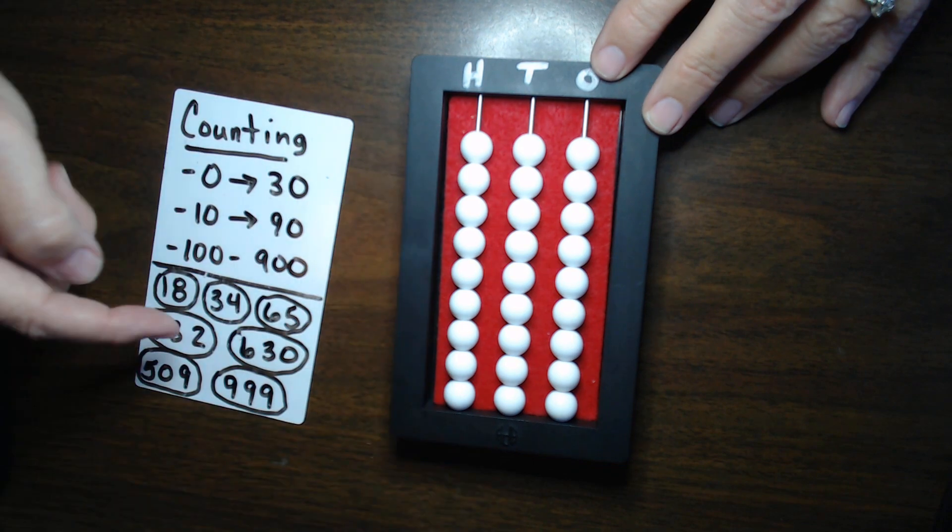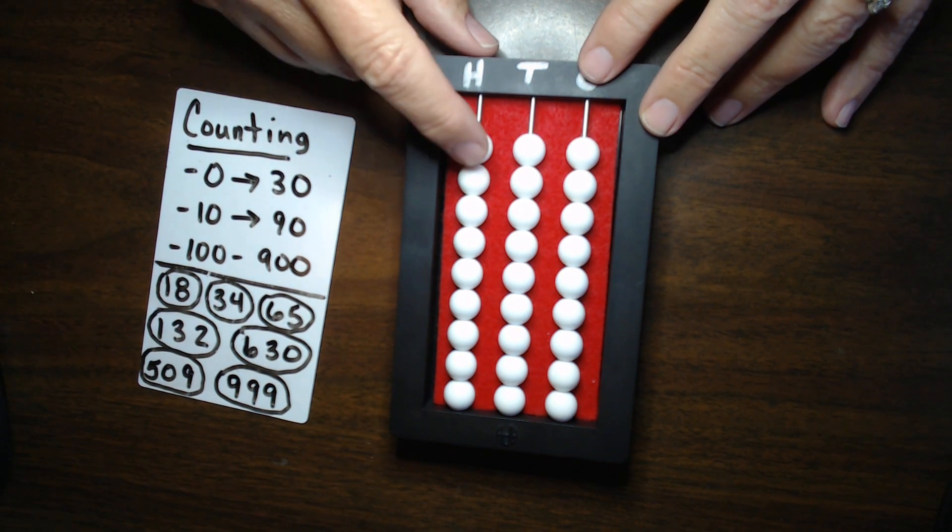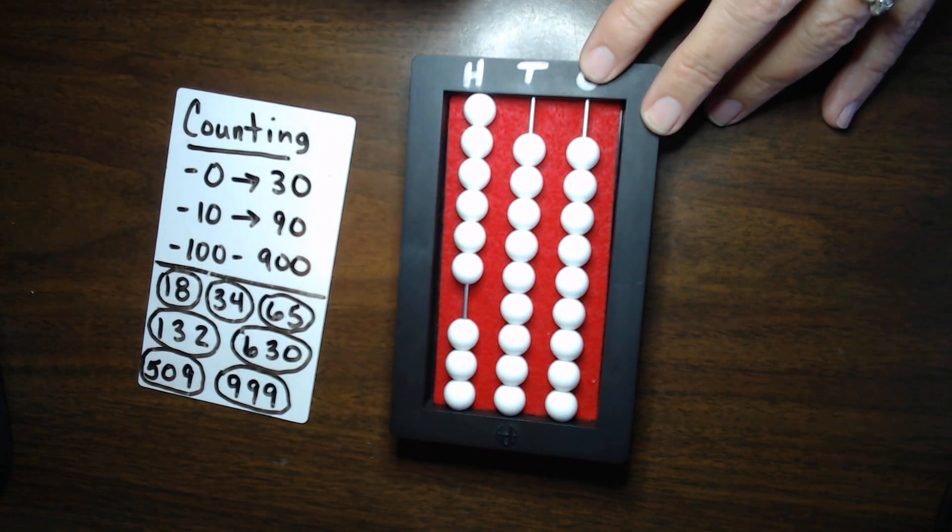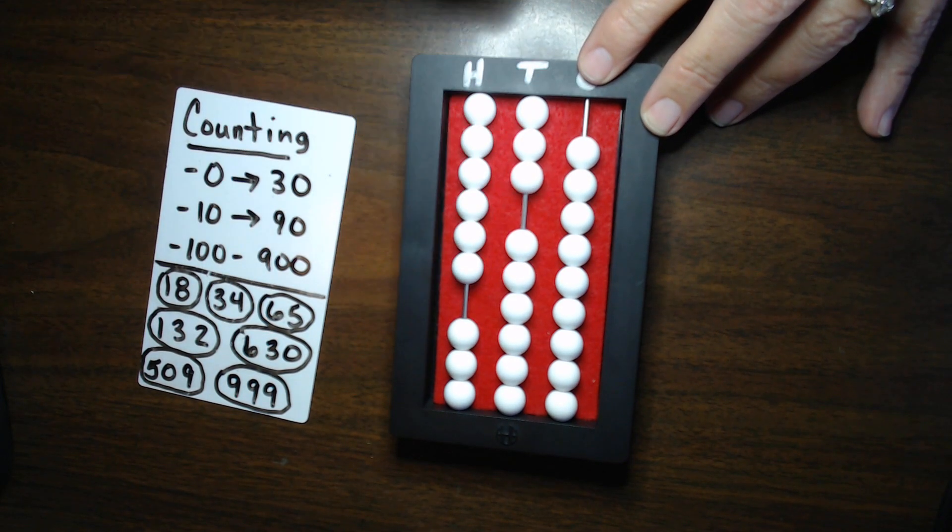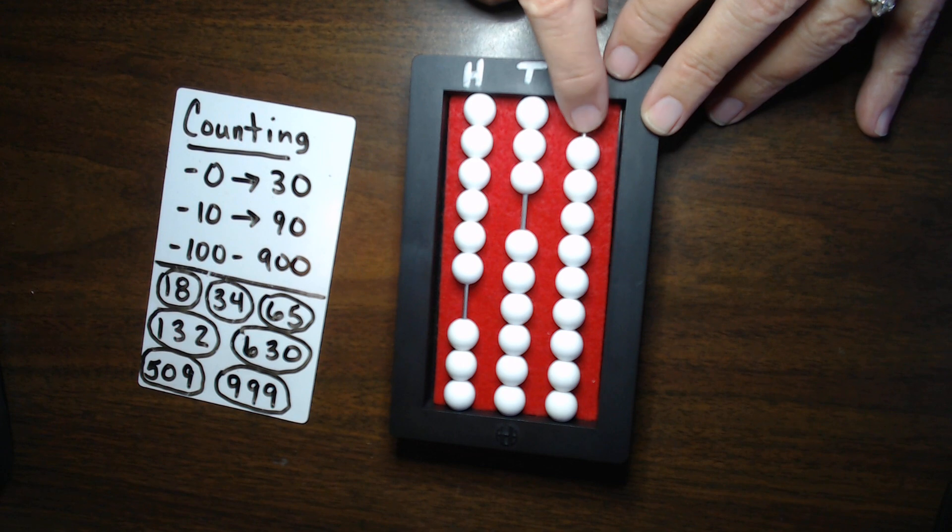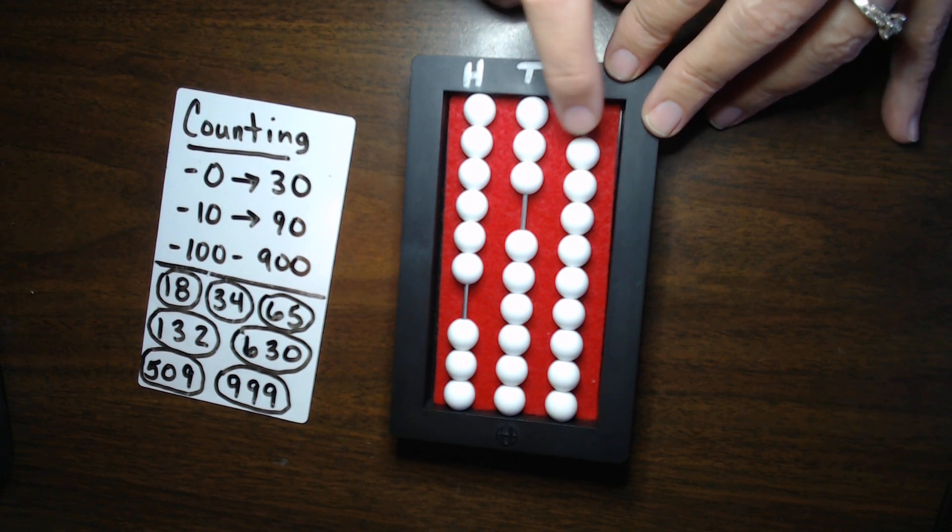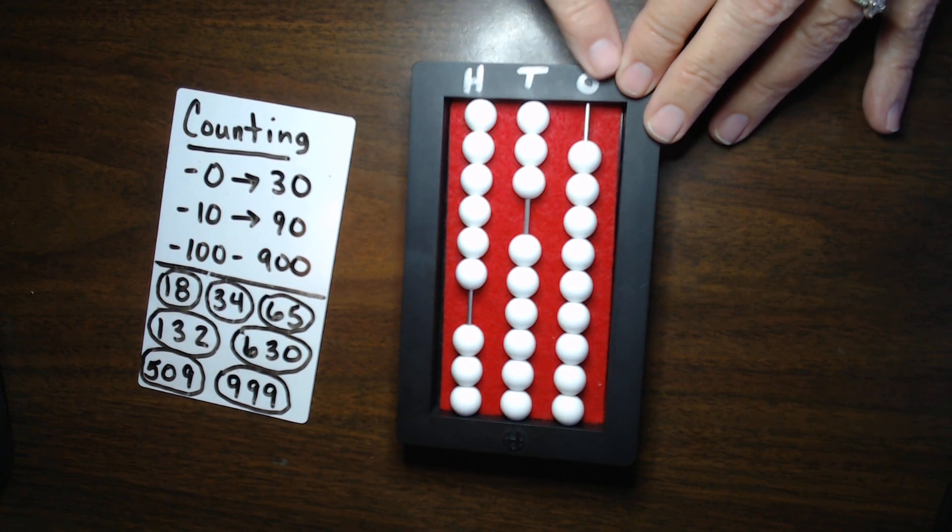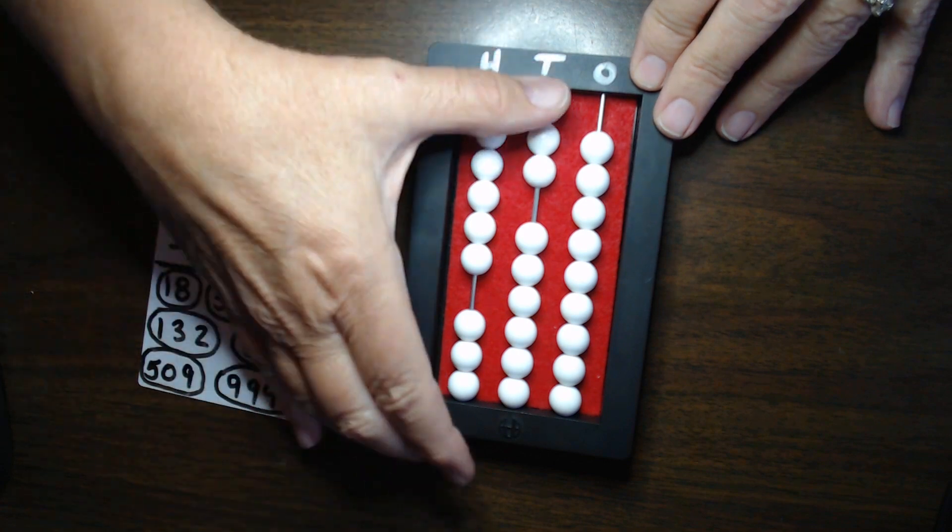Alright. Clear. Let's set 630. 600. 1, 2, 3, 4, 5, 6, 100. 10, 20, 30. And in this case, we have the 0. We just leave that with no beads set. We leave it in the cleared position in this 1s column. 630. Alright. Clear.